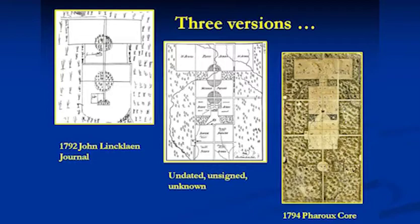We have the map in the middle, which is unknown — it's not signed, we don't know who did it. And I just found out this morning that it was done in 1792 by Benjamin Wright for $1. That was his original design. And then on the right-hand side, you have the core of the Faroe map.